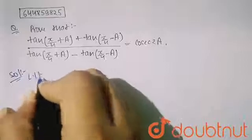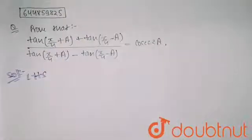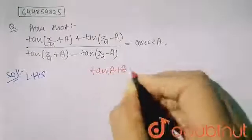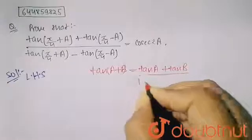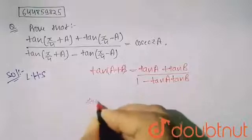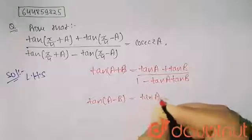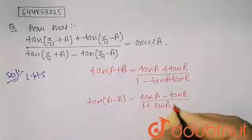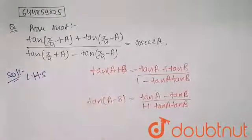So I will take my LHS part, and you can see that here the tan(a+b) formula is forming and here tan(a-b). So the formula for tan(a+b) is equals to tan a plus tan b upon 1 minus tan a·tan b. Similarly, tan(a-b) is equals to tan a minus tan b upon 1 plus tan a·tan b.